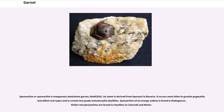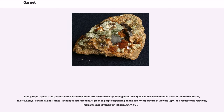Spessartine or spessartite is manganese-aluminium garnet, Mn₃Al₂(SiO₄)₃. Its name is derived from Spessart in Bavaria. It occurs most often in granite pegmatite and allied rock types and in certain low-grade metamorphic phyllites. Spessartine of an orange-yellow is found in Madagascar. Violet-red spessartines are found in rhyolites in Colorado and Maine. Blue pyrope-spessartine garnets were discovered in the late 1990s in Bekily, Madagascar. This type has also been found in parts of the United States, Russia, Kenya, Tanzania, and Turkey.